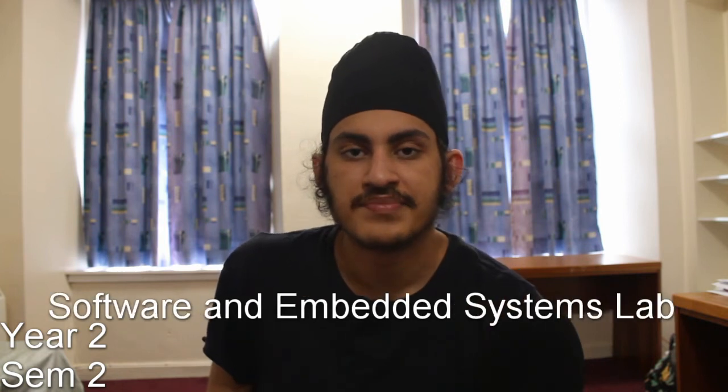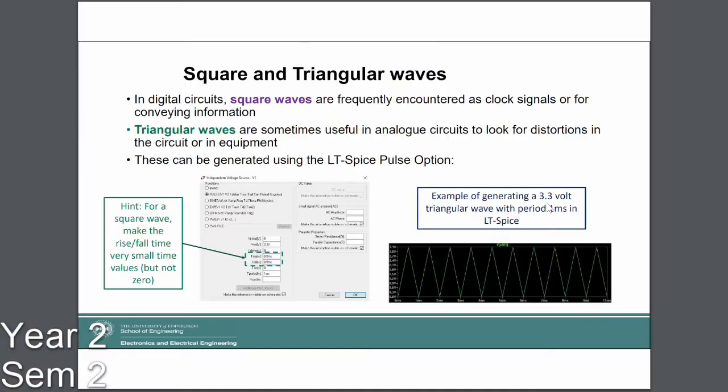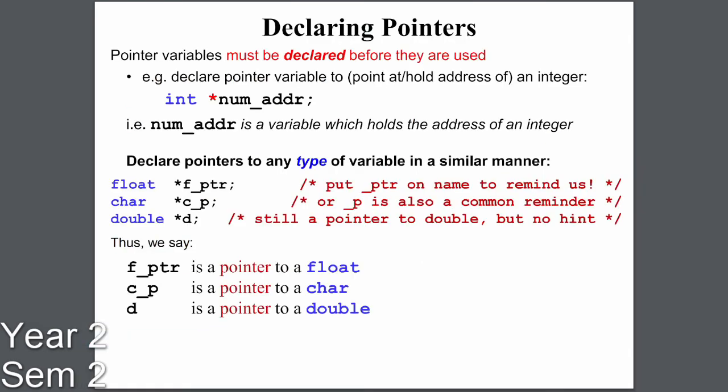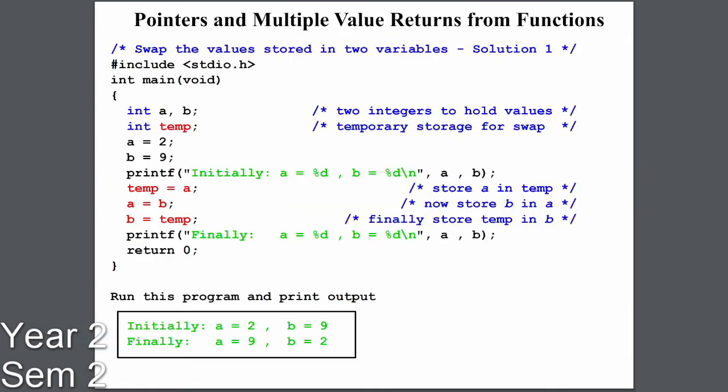My final unit was Software and Embedded Systems Laboratory, split into two parts: C programming and amplifier design. The lab ran every week for ten weeks, and each week built on the previous one — so if you missed a week you wouldn't know what was going on the next week. I was in Malaysia, so I couldn't attend the labs and basically skipped six of them, falling very behind. We had quizzes and assignments dependent on what was learned in the lab, and I wasn't there at all.